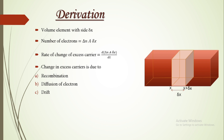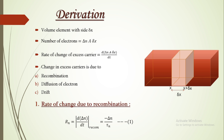When we consider recombination, generation is also implicitly involved. The rate of change of excess carriers due to recombination involves the carrier lifetime, and the equation is: R_n = d(delta n)/dt = −delta n / tau_n, where tau_n is the electron lifetime and delta n = n − n₀ (the difference between the final and initial electron counts). The negative sign implies annihilation of charge carriers. This is Equation 1.